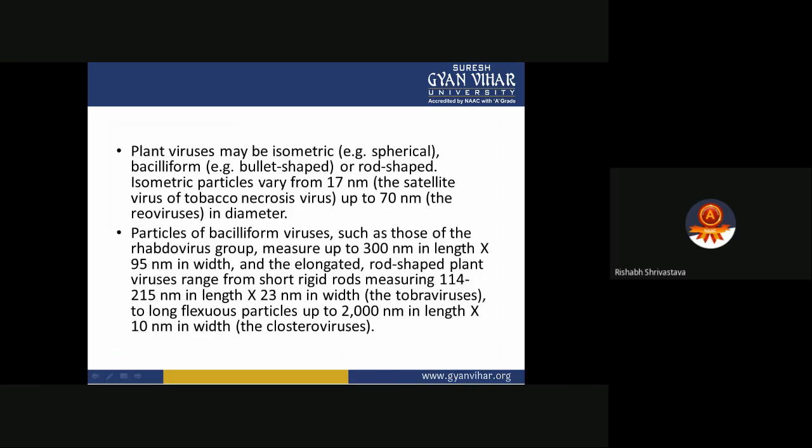Viruses may be isometric (spherical), bullet-shaped, or rod-shaped. Isometric particles vary from 17 nanometers for the satellite virus of ANV to 17 nanometers for the reovirus in diameter. Particles of vesiculiform viruses, such as rhabdoviruses, measure up to 300 nanometers in length and around 95 nanometers in width. Elongated rod-shaped plant viruses range from short rigid rods of 114 to 115 nanometers in length by 23 nanometers in width — for example, tobraviruses — to very long viruses such as closteroviruses, which can reach up to 2000 nanometers in length and 10 nanometers in width.